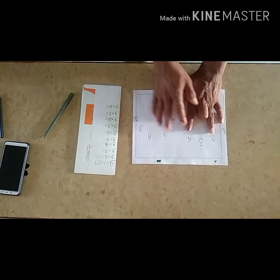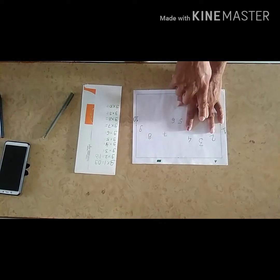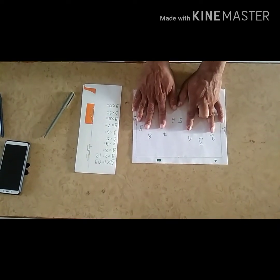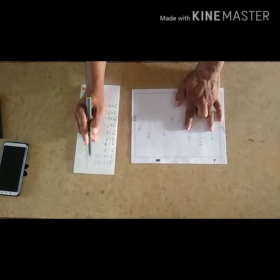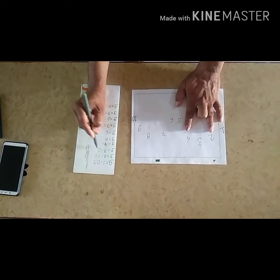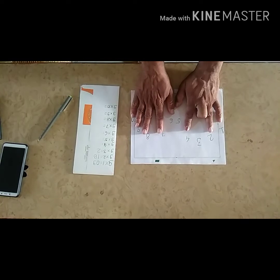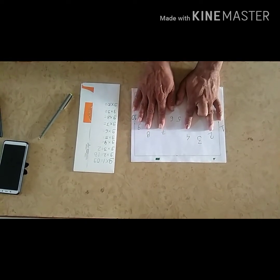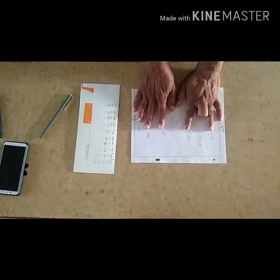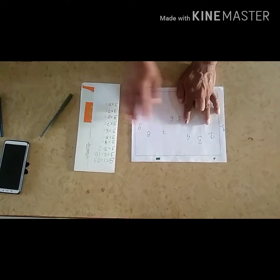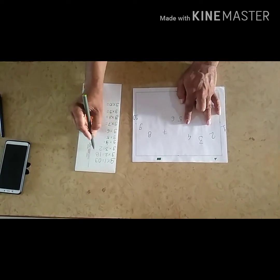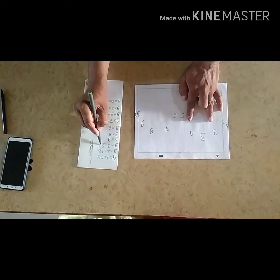For 9 into 3, we will fold the number 3 finger. Again, we will count 2 on the left. So we will write 2, and 7 on the right. 1, 2, 3, 4, 5, 6, 7 on the right. So 9 into 3 is equal to 27.